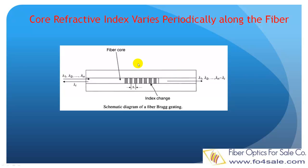Simply put, a fiber Bragg grating is a distributed Bragg reflector. This is what a simple FBG looks like. Normal fibers have uniform refractive index along the length, but in the FBG, the refractive index of the core changes periodically along a short length. As shown in this picture, the period is lambda.